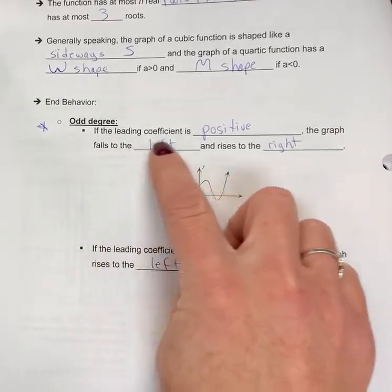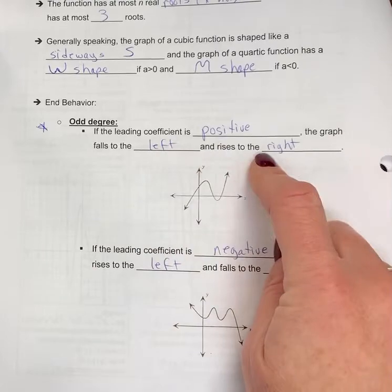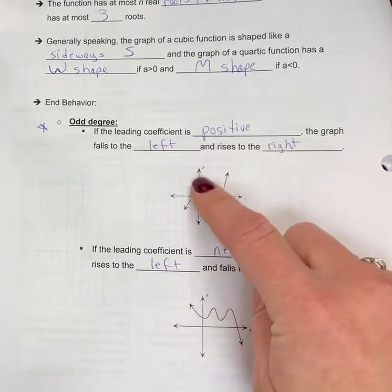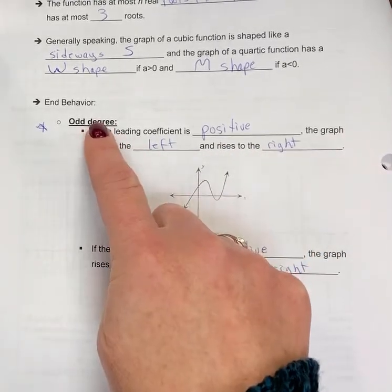In the odd degree, if the leading coefficient is positive, the graph falls to the left and rises to the right. That's the end behavior. It falls left, rises right when it's odd.